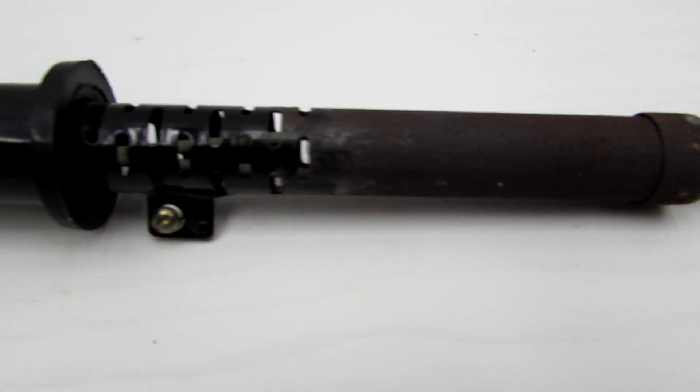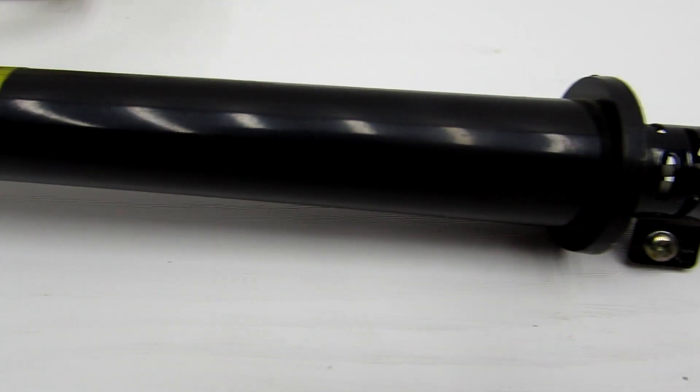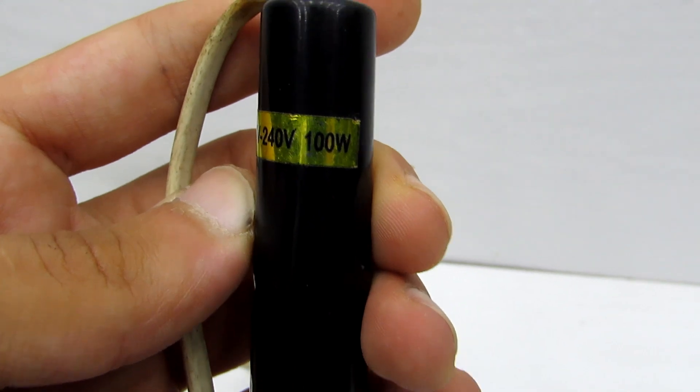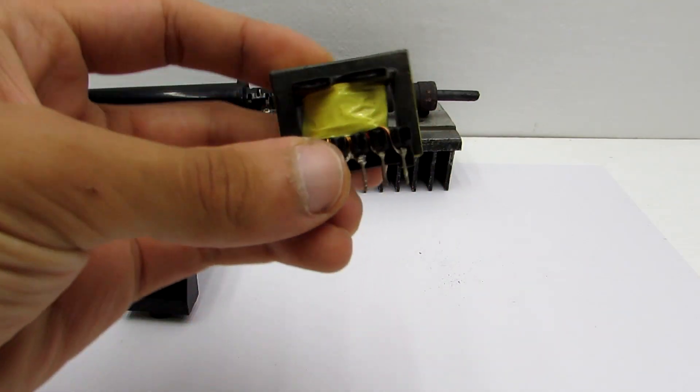The third method is to use a powerful soldering iron. Turn on a powerful soldering iron, for example 100 W, and wait for it to fully warm up.